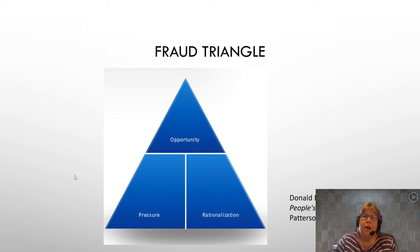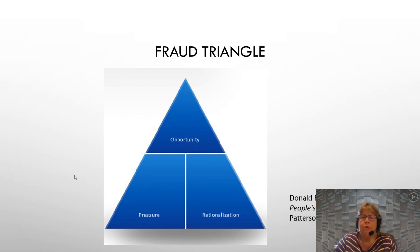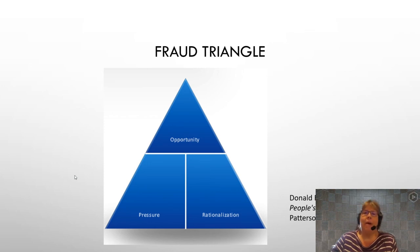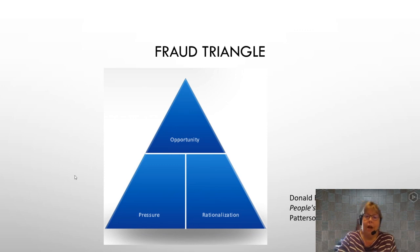The last component is rationalization. Most fraudsters had some ability to rationalize, though further research shows that was not always the case. Rationalization is basically how the fraudster can sleep at night — how they put away a guilty conscience. You hear language like, 'I didn't get that raise I deserved,' or 'everybody else is making more money.' These are types of rationalizations that allow people to justify their actions.